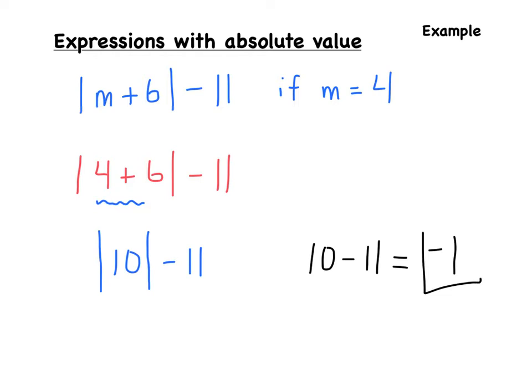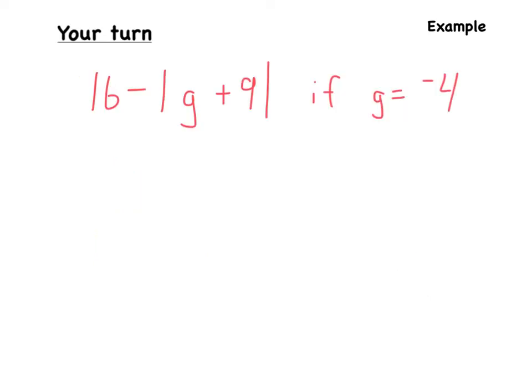So the absolute value of m plus 6, minus 11, when m is equal to 4, our answer is negative 1. Pause the video, try this one, and unpause when you're ready to see what I have done.